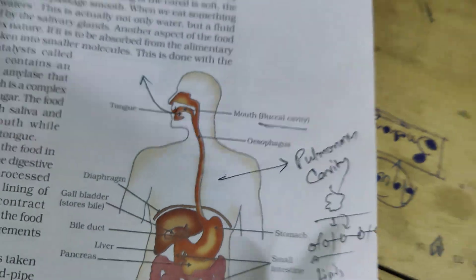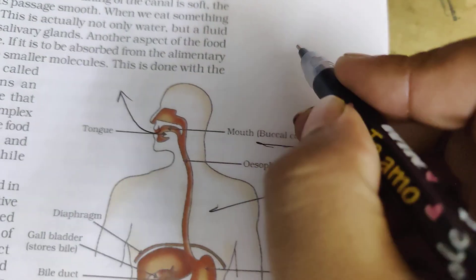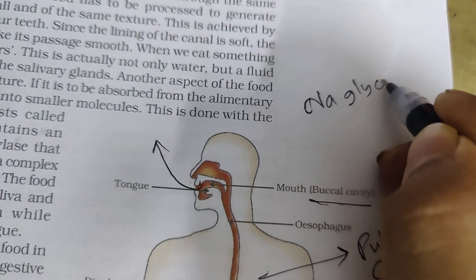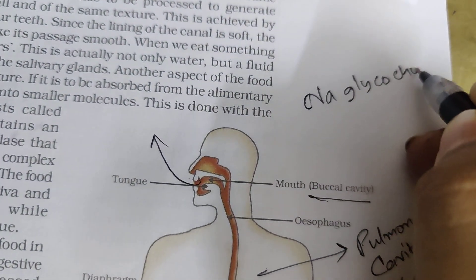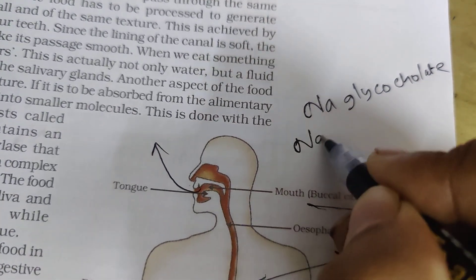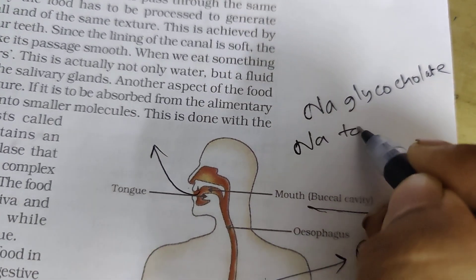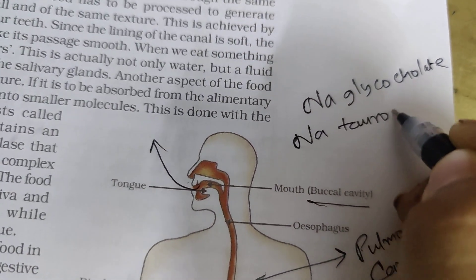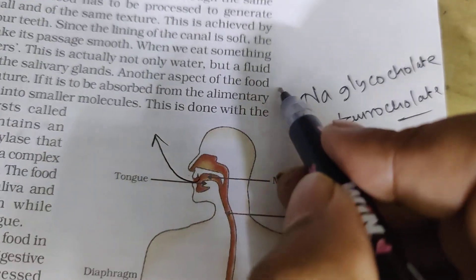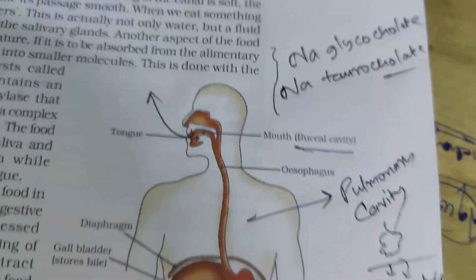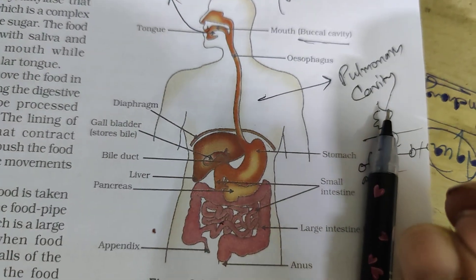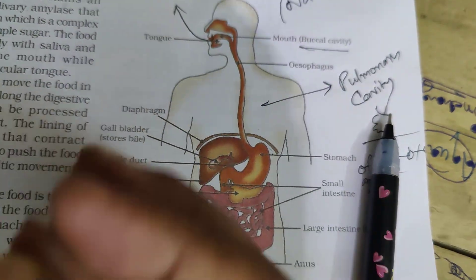I am writing here: sodium glycocolate and sodium taurocholate. These two confirm the bile juice or bile salts. Bile salts have the same action — emulsification of fat.